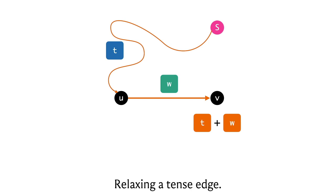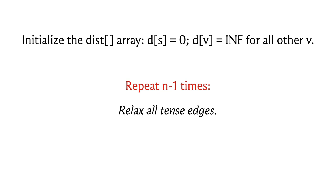Now let's see how Bellman-Ford performs these relaxations. It is an elegant and simple algorithm. We initialize the distance array as usual, then repeat the following process n − 1 times: relax every tense edge — go over every edge in the graph, check if it's tense, and if so relax it. The running time comes from this outer loop running n − 1 times and the inner loop running m times over all edges.